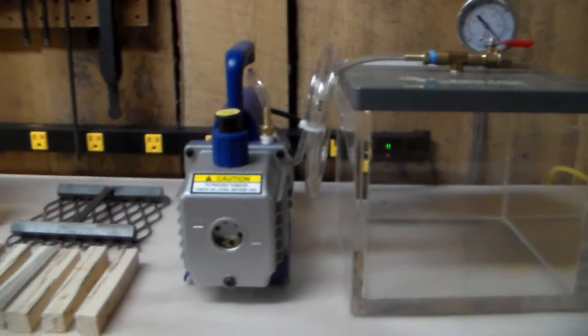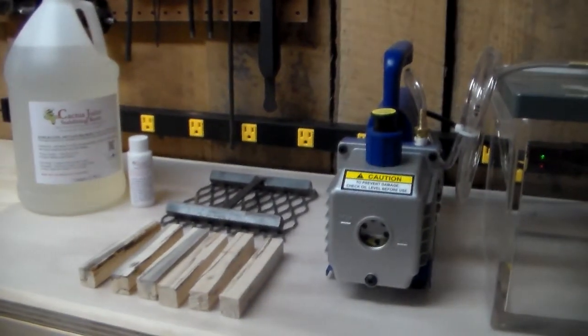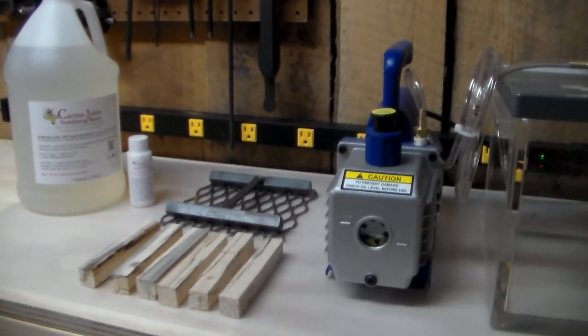You also get a grate to hold down any blanks you have in the chamber. That's what the metal mesh piece is there in the background right beside the pump. It helps keep the pen blanks or small knife blanks, knife scale blanks, whatever you got in there, gun blanks.